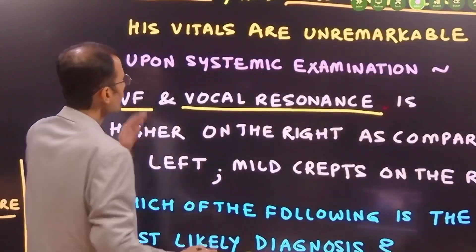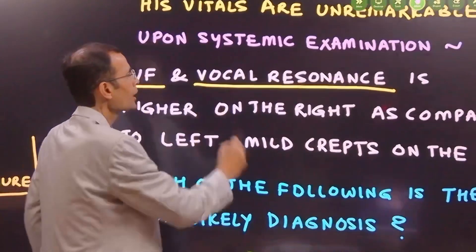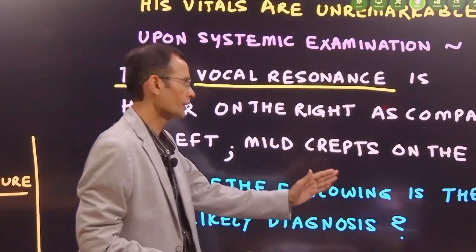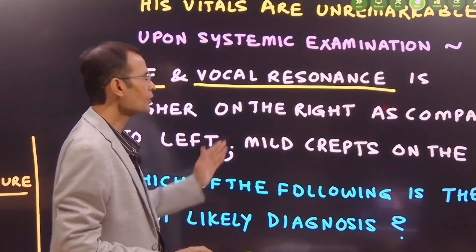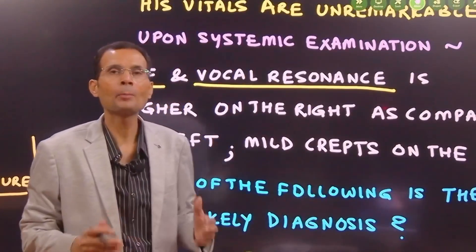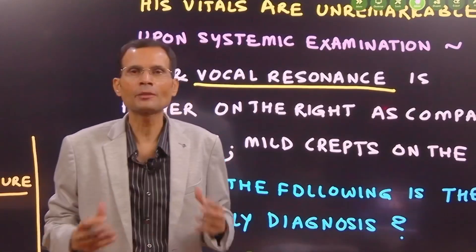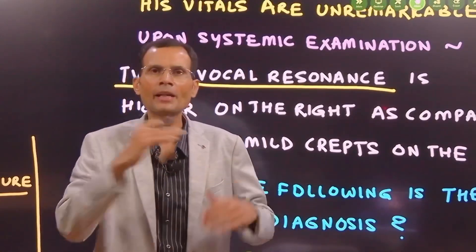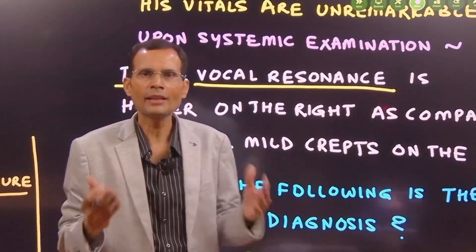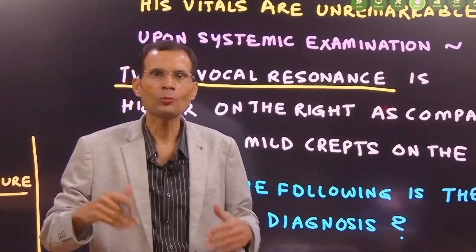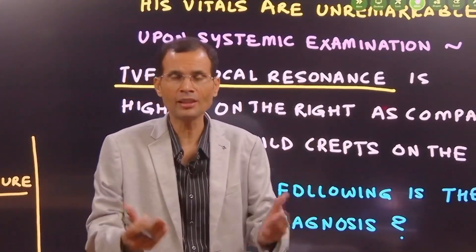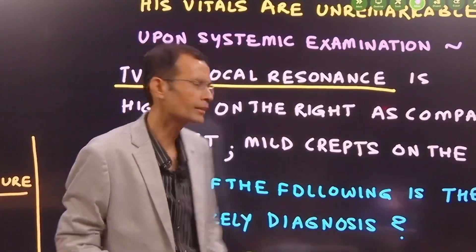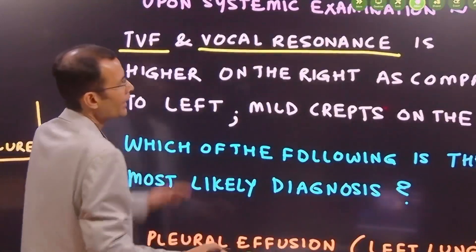Now coming to the systemic examination, tactile vocal fremitus and vocal resonance is higher on the right side as compared to the left side. You know, respiratory system is a comparative examination, so any test will be comparative - one side higher, one side lower in disease conditions, otherwise it will be equal on both sides. So it's higher on the right side compared to the left and mild creps on the right side.